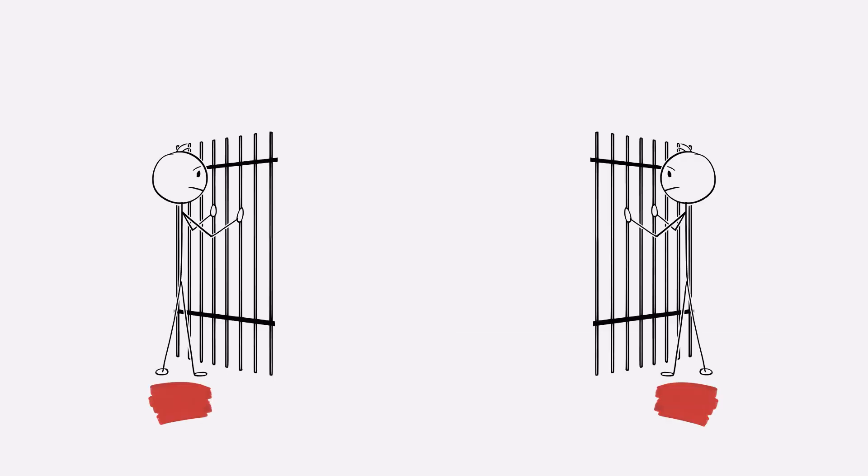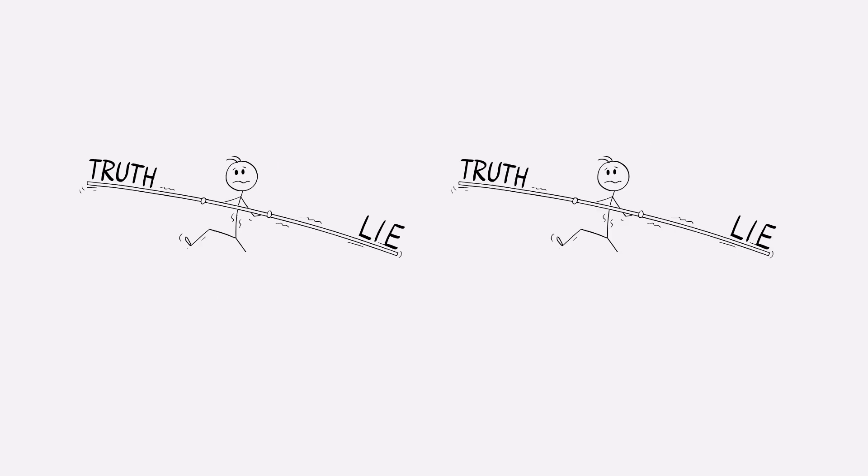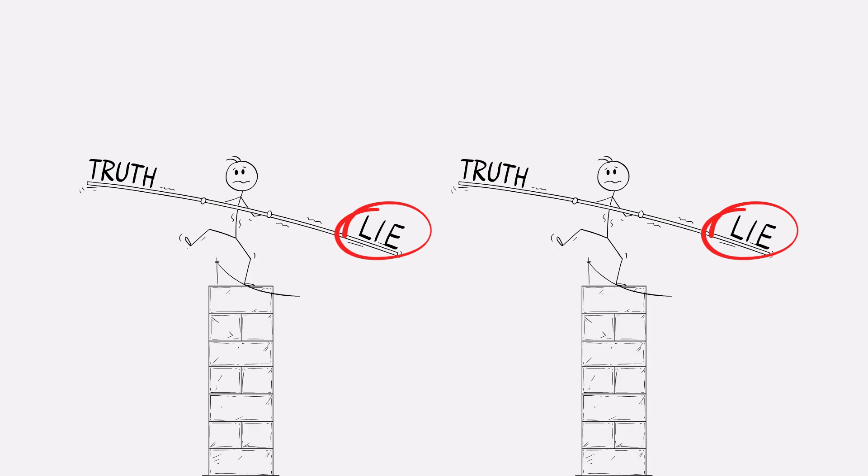The prisoner's dilemma leads to a key idea, the Nash equilibrium. This is when both players or individuals choose betrayal. Not because it's the best overall, but because it's the most stable choice given each player's incentives.